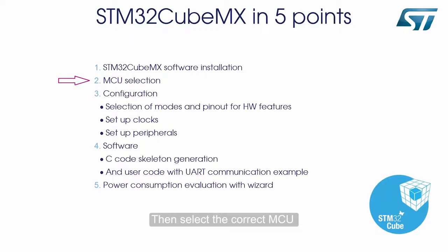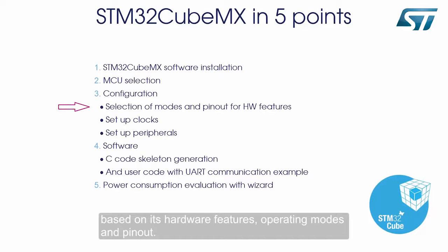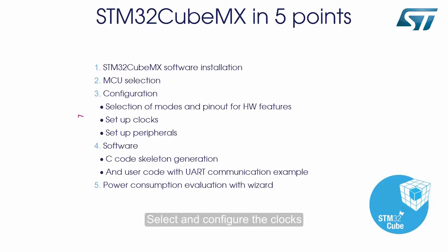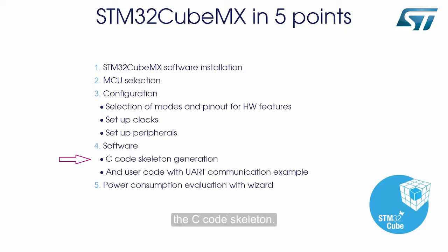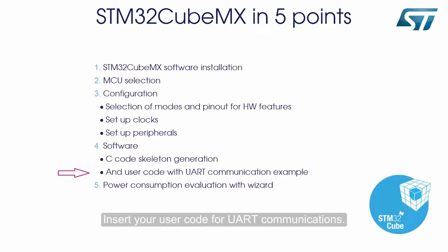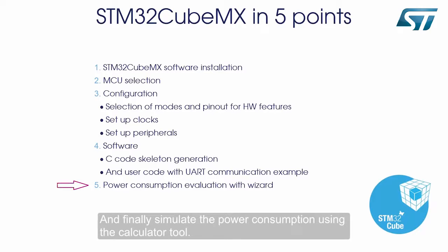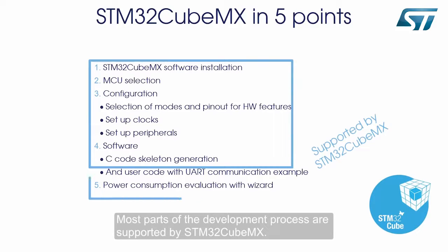Then, select the correct MCU based on its hardware features, operating modes, and pinout. Select and configure the clocks and peripherals. Use the STM32CubeMX graphical software configuration tool to generate the C code skeleton. Insert your user code for UART communications. And finally, simulate the power consumption using the calculator tool. Most parts of the development process are supported by STM32CubeMX.